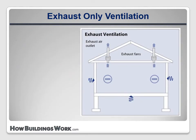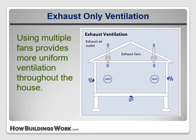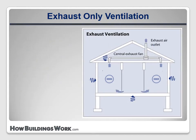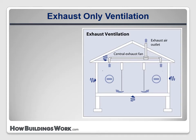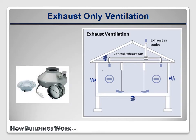One way to improve the effectiveness of exhaust-only systems is to use multiple fans in different locations of the house. They can be set up so the total flow rate meets the calculated ventilation requirement. Of course, this setup is about twice as expensive to install. Another way to accomplish the same goal is to install an inline fan with multiple inlets to draw air from multiple locations in the house.